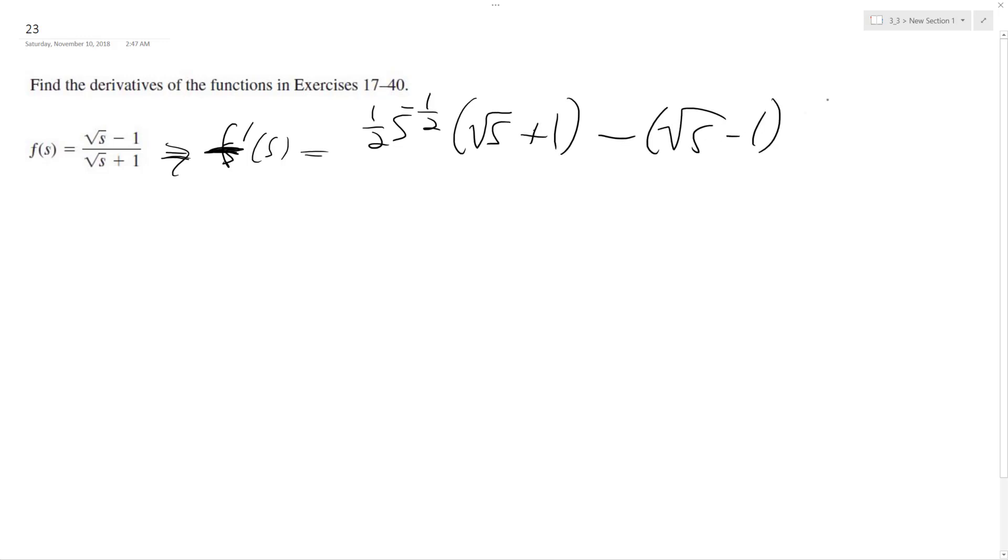This is the numerator times the derivative of the denominator. So it's going to be same thing, so 1 half S raised to the negative 1 half. And then the denominator is just going to be square root of S plus 1 squared.